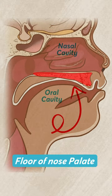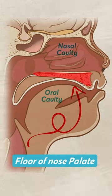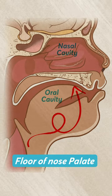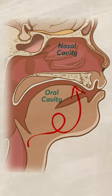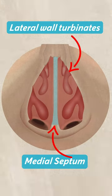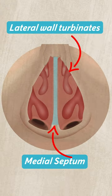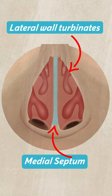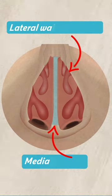The floor of the nose is formed mainly by the palate, that separates the nasal cavity from the oral cavity. Then we have the medial wall, which is formed by the septum that divides the nose into two equal halves, and we have the lateral wall, which is formed by the turbinates. This is the basic understanding of the internal nasal anatomy.